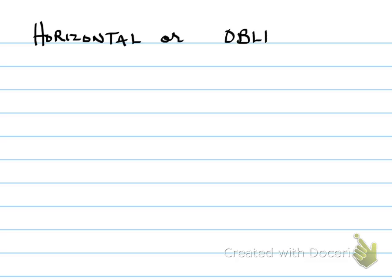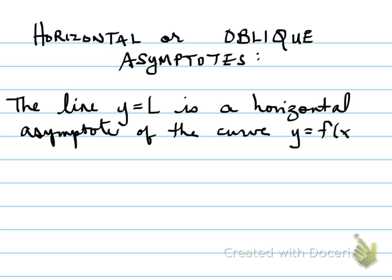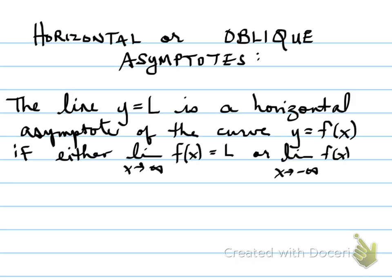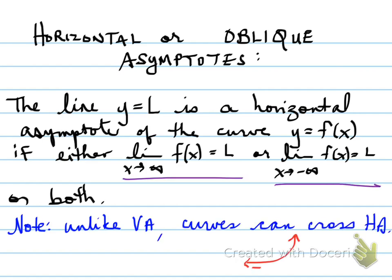For horizontal and oblique asymptotes: the line y equals L is a horizontal asymptote if either the limit as x approaches infinity of f(x) equals L, or the limit as x approaches negative infinity of f(x) equals L, or both. Unlike the vertical asymptote, curves can cross the horizontal asymptote — this is an important understanding.